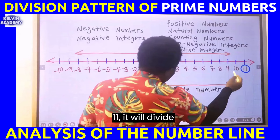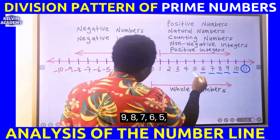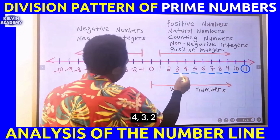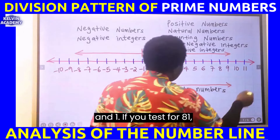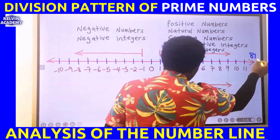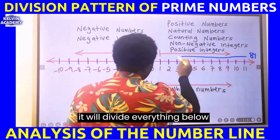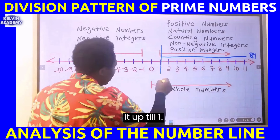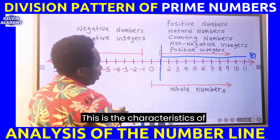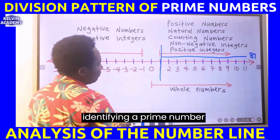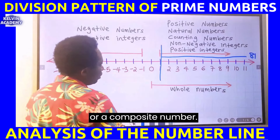If you test 11, it will divide 10, 9, 8, 7, 6, 5, 4, 3, 2, and 1. If you test 481, it will divide everything below it up till 1. This is the characteristic of identifying a prime number or a composite number.